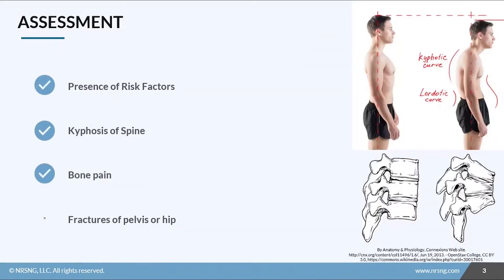When assessing these patients, the first thing we'll notice is that they have one or more risk factors. Maybe they're female — for example, an elderly female who doesn't consume enough calcium and is taking corticosteroids. She's going to be at really high risk.